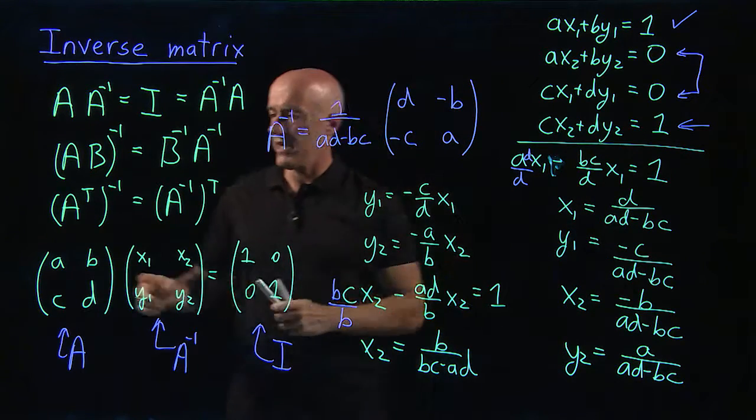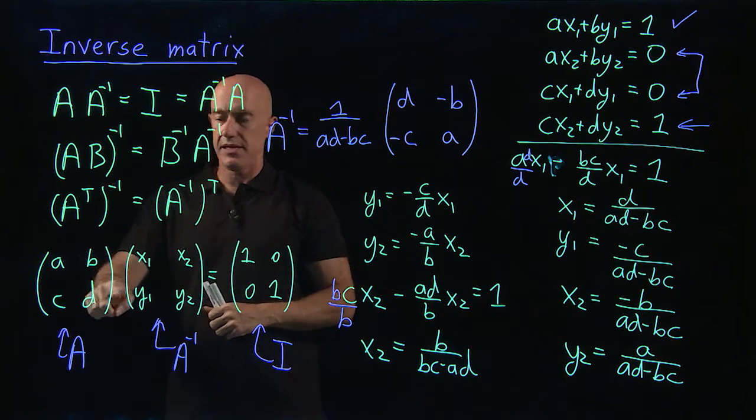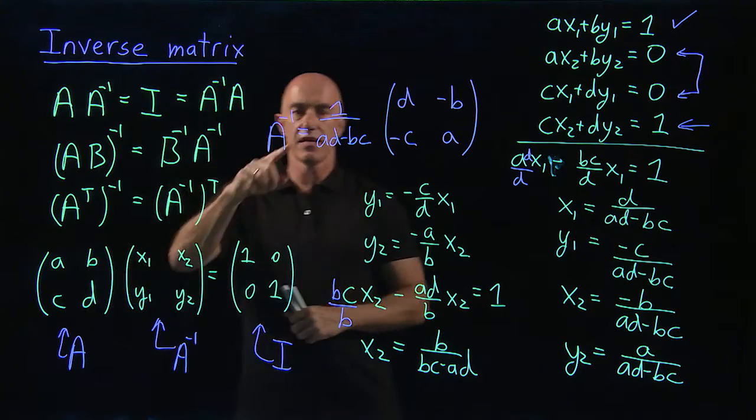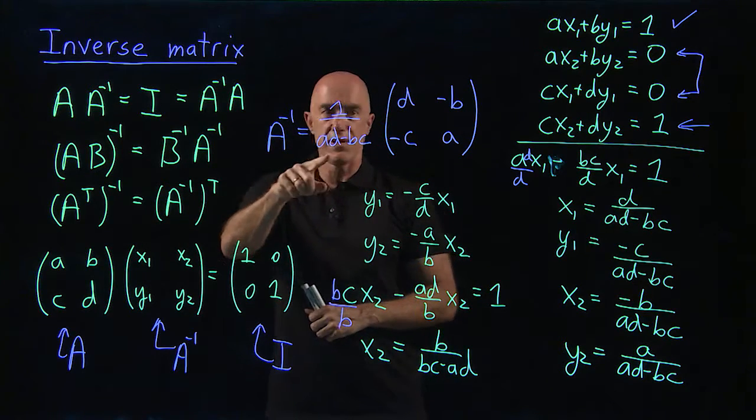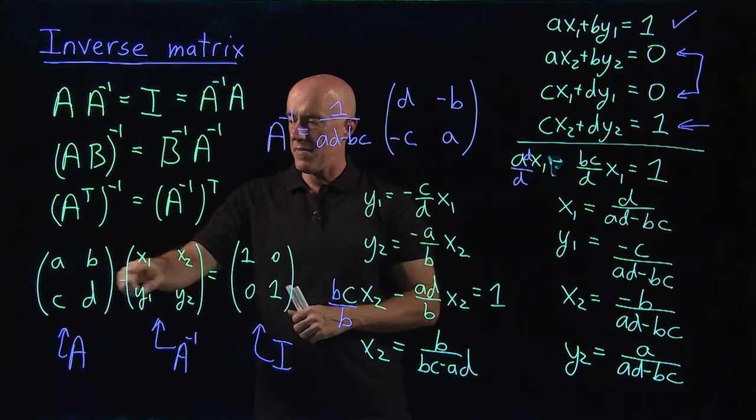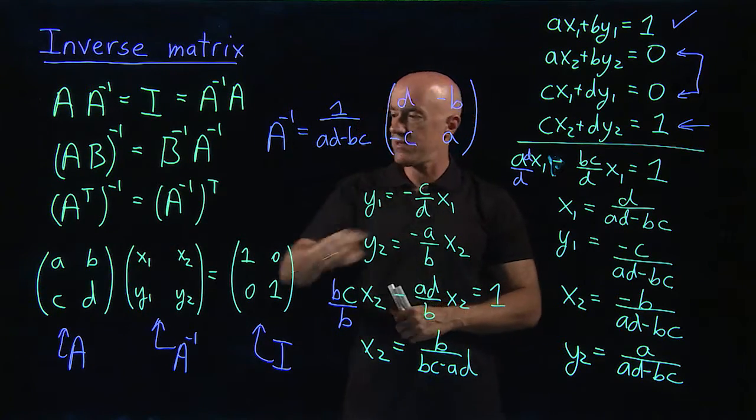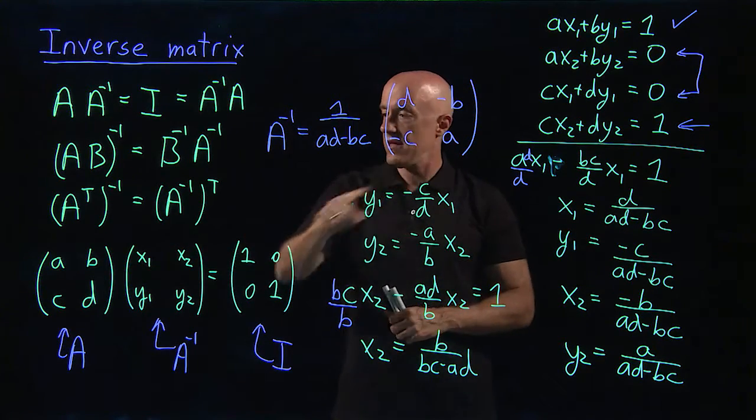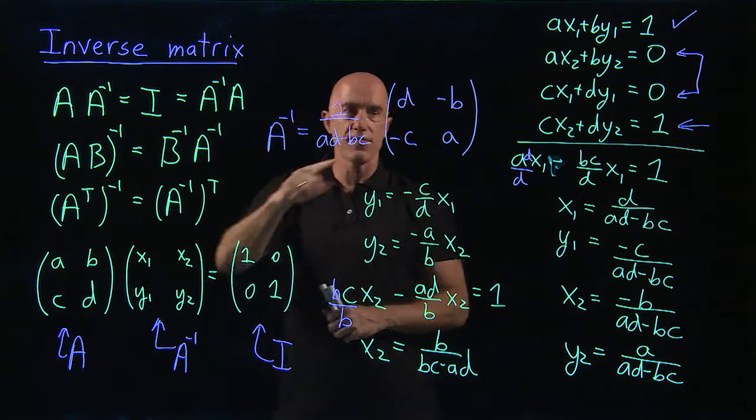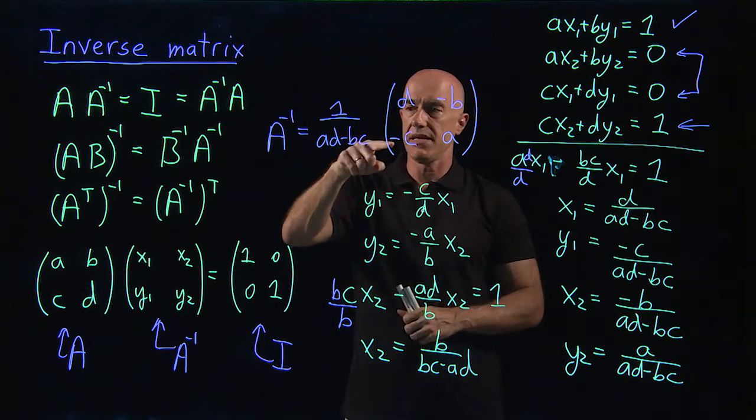So interesting. A, b, c, d. The inverse of that is 1 over ad minus bc. And then the matrix itself, the diagonal elements switch. So we have d, a, and then we just negate the off-diagonal elements, minus b and minus c.